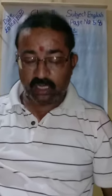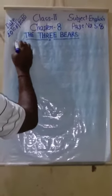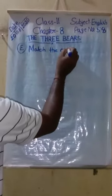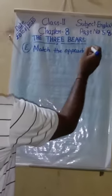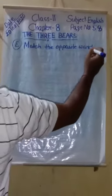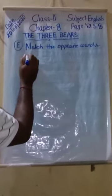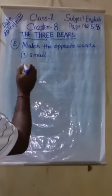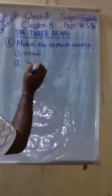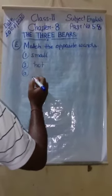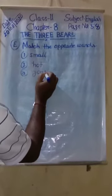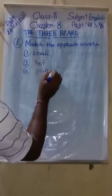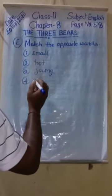Now question number E, match the opposite words. L-A-T-C-H. First number is small, second number is hot, third number young, fourth number, close.